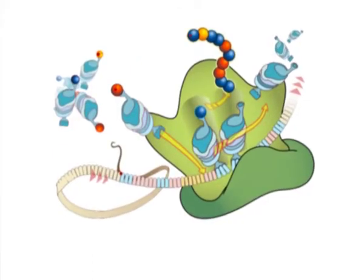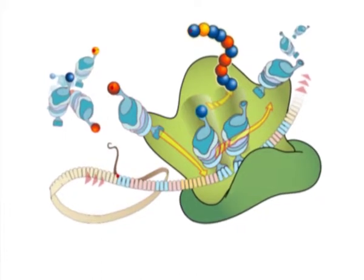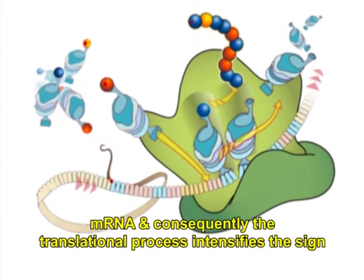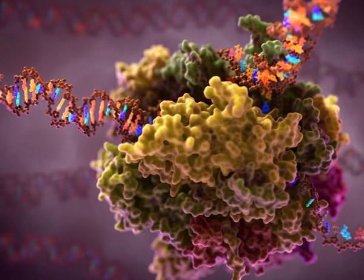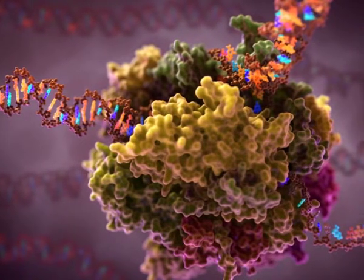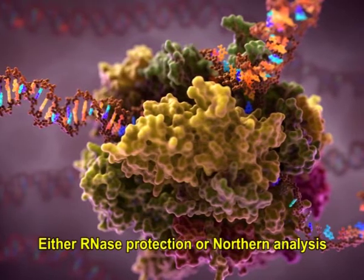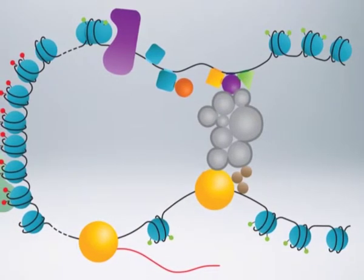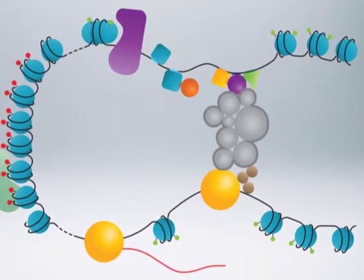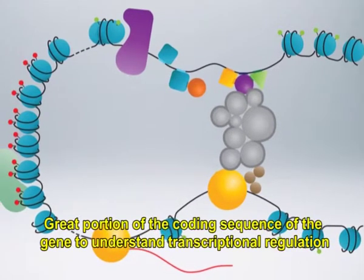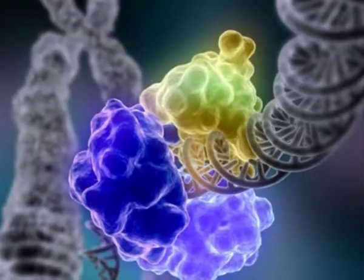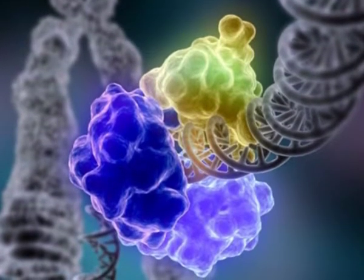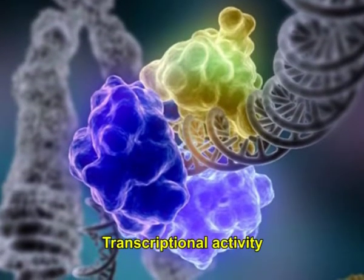Both of these reporters have the benefit that they are influenced by the activity of a protein which is translated from an mRNA, and consequently the translational process amplifies the signal. It is also likely to measure RNA transcription directly by using an assay that uses either RNase protection or northern analysis to observe mRNA levels. In some circumstances where the regulatory components lie within the coding regions of the gene being studied, it is usually essential to use a large portion of the coding sequence of the gene to understand transcriptional regulation. Sources hosting some sort of a marker into the reporter gene that lets it be distinguished from the endogenous gene can allow measurement of transcriptional activity.